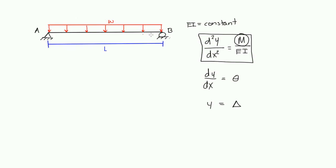In our case, our beam has only one span, A to B. We need to find the equation of the internal moment that illustrates the moment at any point along this span. The first thing we need to do is figure out the reactions at A and B. The resultant of this uniformly distributed load w is w times L. Since the loading is symmetrical, the reactions at A and B are wL/2.